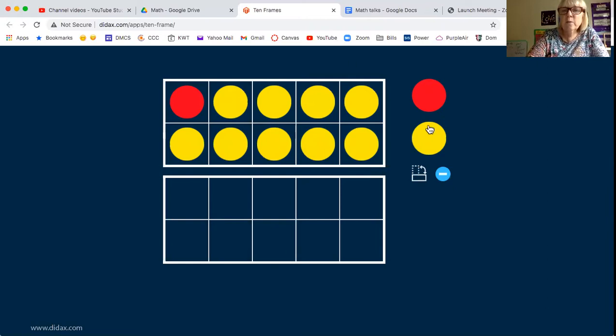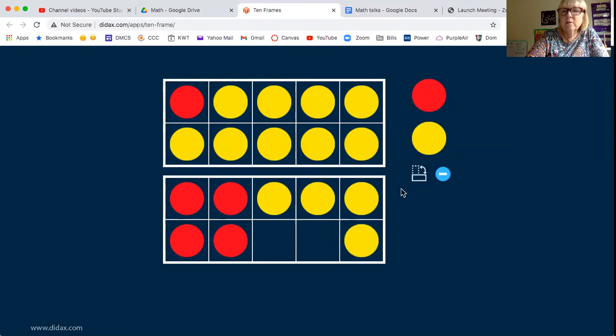Let's do another one. This time I'm going to put in four. What's four's partner to make 10? You can look at the empty spaces. Four's partner to make 10 is six. One, two, three, four, five, six. Four and six are partners. They fill up the space and make 10.